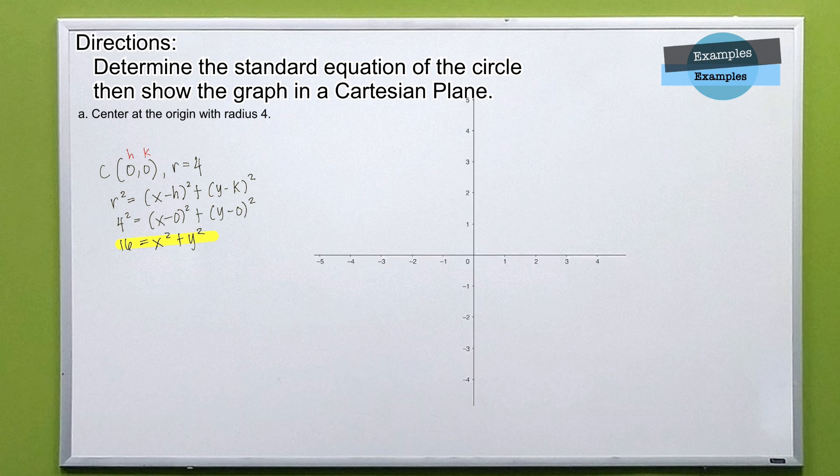To graph the equation, locate the center first. Since our radius is 4, from the center, plot the point 4 units to the right, 4 units to the left, 4 units below it, and 4 units above it. Then, connect the outer points in circular pattern.